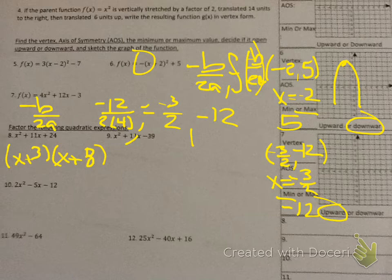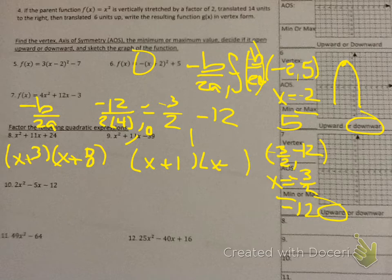Number 9 — that should have been 10x, not 11x. Plus and minus means plus and minus in parentheses. Numbers that multiply to give you 39 are 1 and 39, and 3 and 13. Which of those subtract to give you 10? 3 and 13. And it should be 13 minus 3 because that gives me a positive 10.